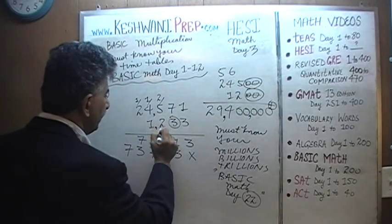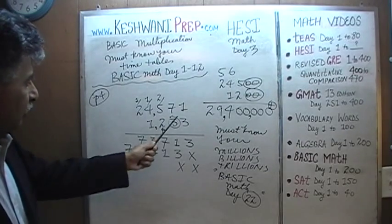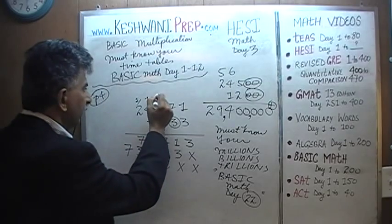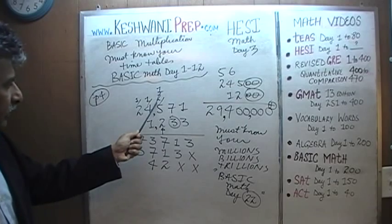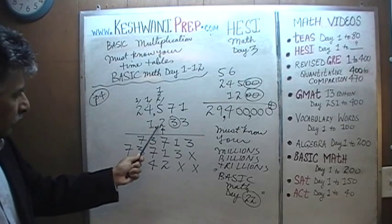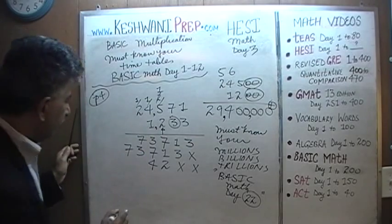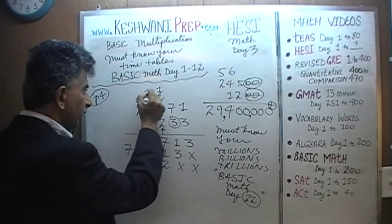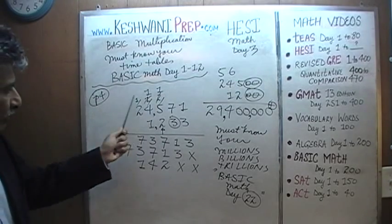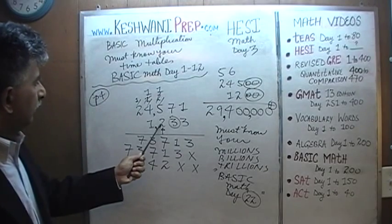Now we deal with the 2, which is the hundreds digit, so the units and tens digits stay empty. 2 ones are 2; 2 sevens are 14, that's 4 carry 1; 2 fives are 10, plus 1 is 11, that's 1 carry 1; 2 fours are 8, plus 1 is 9; and 2 twos are 4.